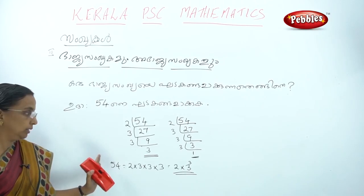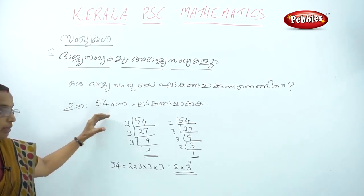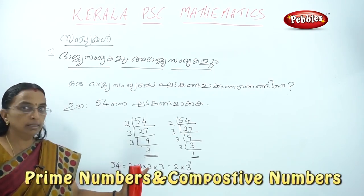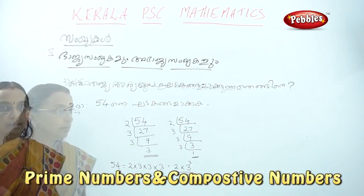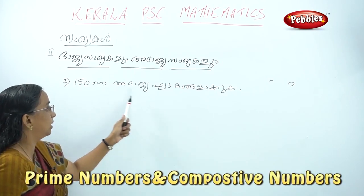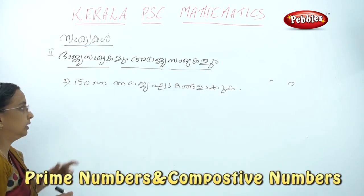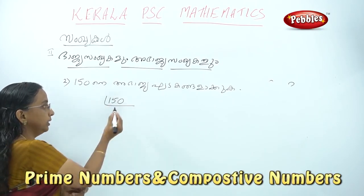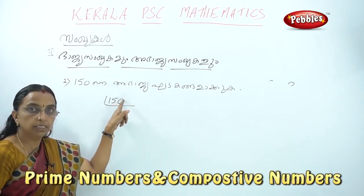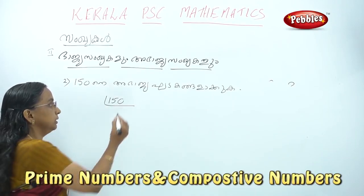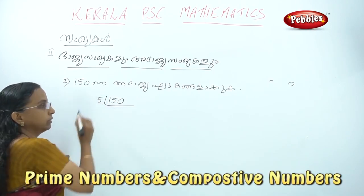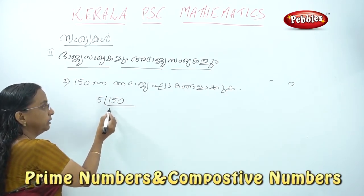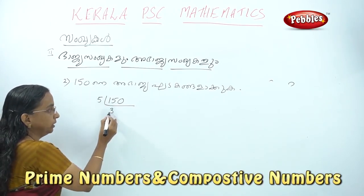If we have 3 method, we will explain. If we have 3 method, we will do the 3 method. If we have 4 method, we will answer. If we have 5 method, we will add a method. If we have 5 method, we will do the 3 method. We will do the 3 method.